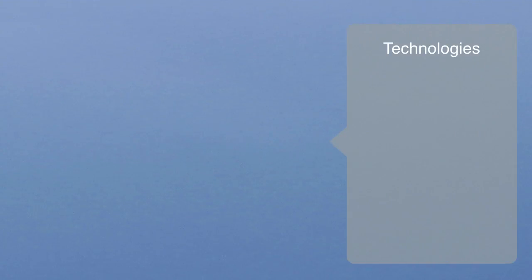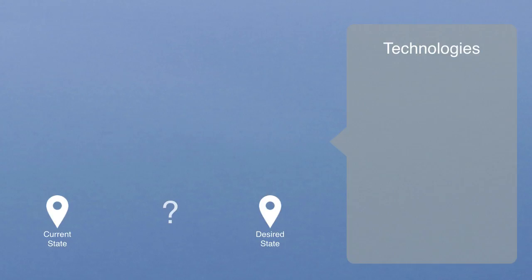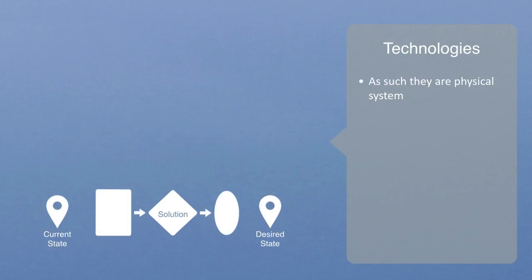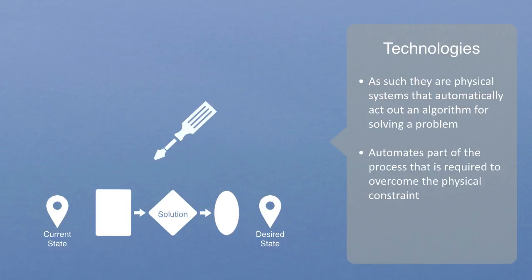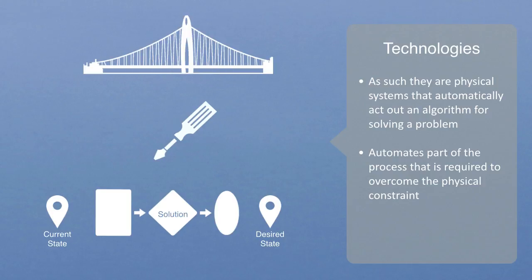In the previous module, we talked about and defined technology as automated systems for solving some given environmental constraint. As such, they are physical systems that automatically act out an algorithm for solving a problem. A screwdriver is a system that automates part of the process required to overcome the physical constraints needed to put a screw into a material. A bridge is an automatic system for solving the problem of getting from one side of a river to another. These are examples of simple linear systems.